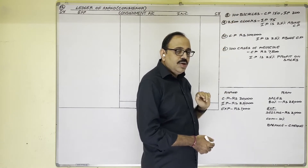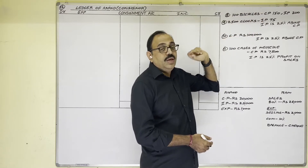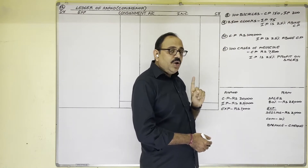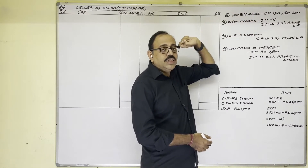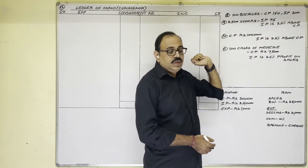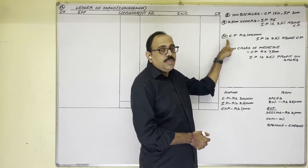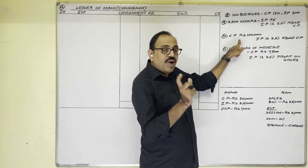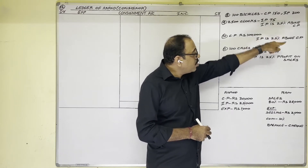In problem 9, 2,500 clocks were sent by the consignor; one clock invoice price is 75 rupees and invoice price is fixed at 25% above cost price. In problem 10, cost price is 1,000,000 rupees — quantity is not given, total value is given — and invoice price is 25% profit above cost price.